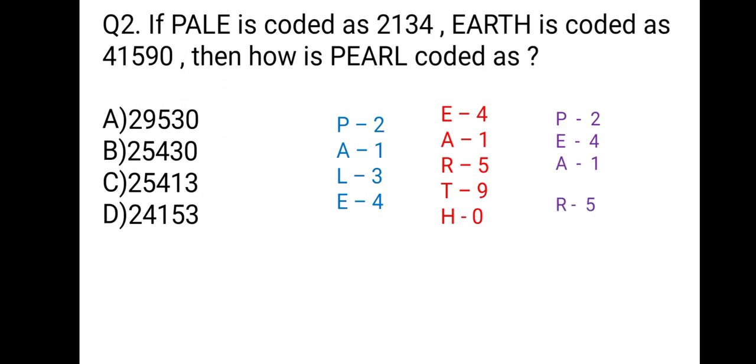A is 1, R is 5, L is 3. So, we have PEARL's code. And we can check it from the options. So, our answer is D. Let's have one more question on the same type.